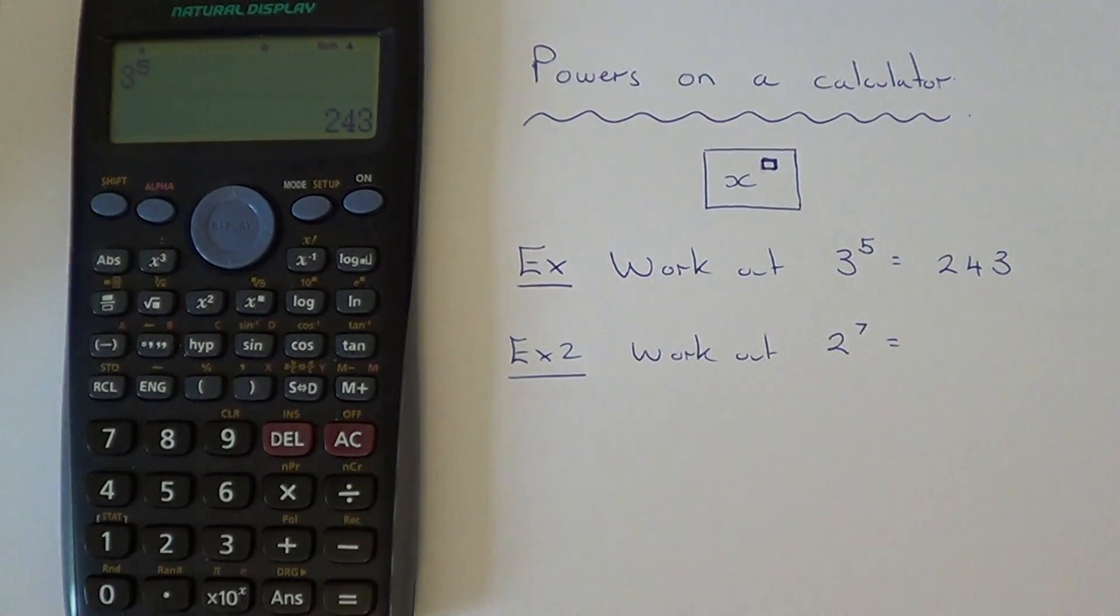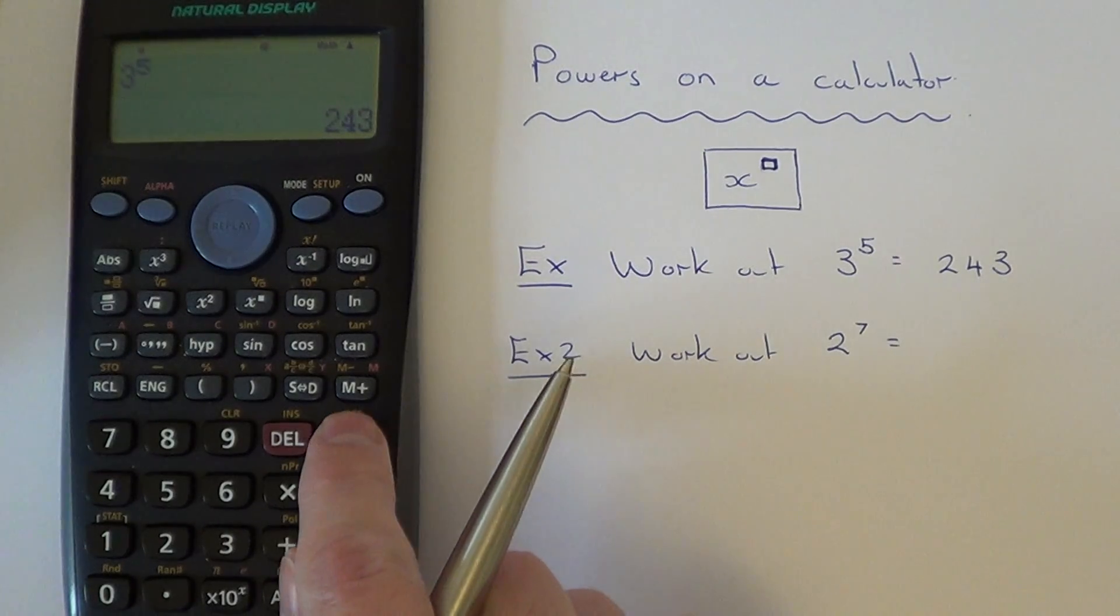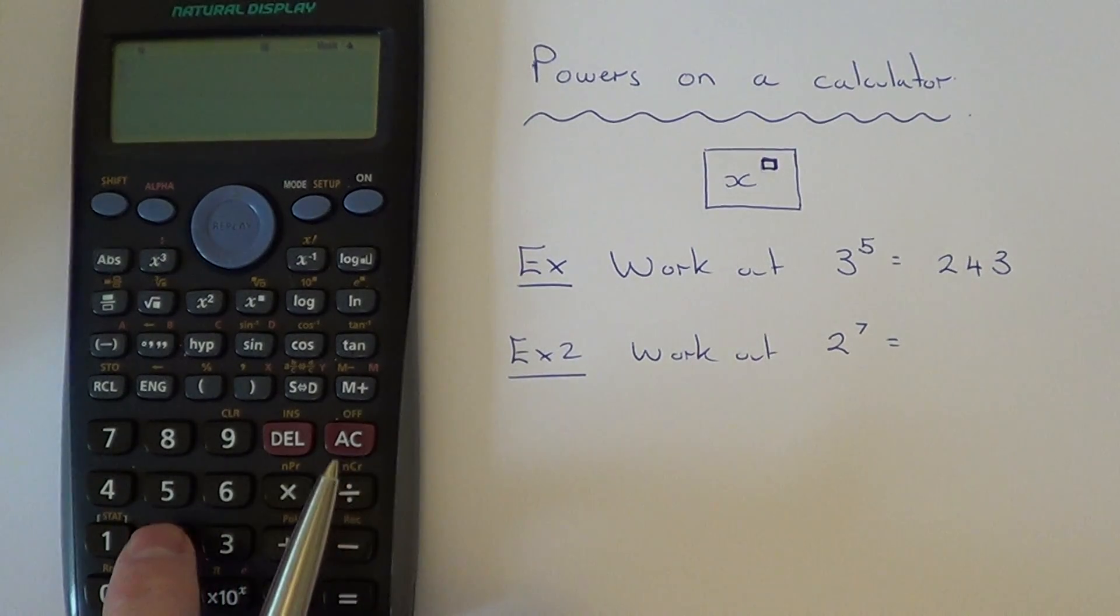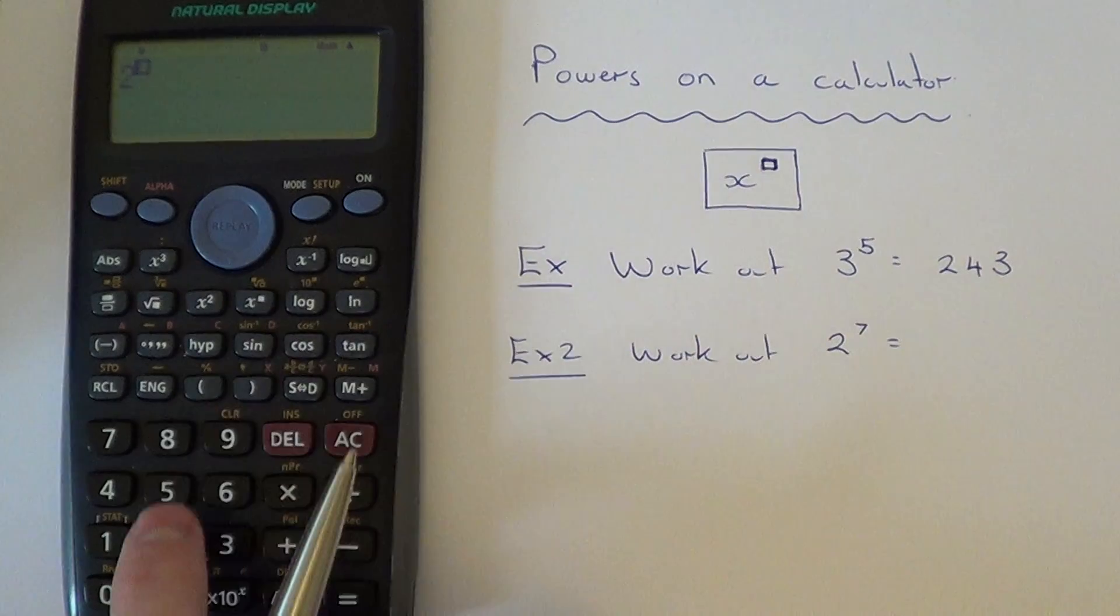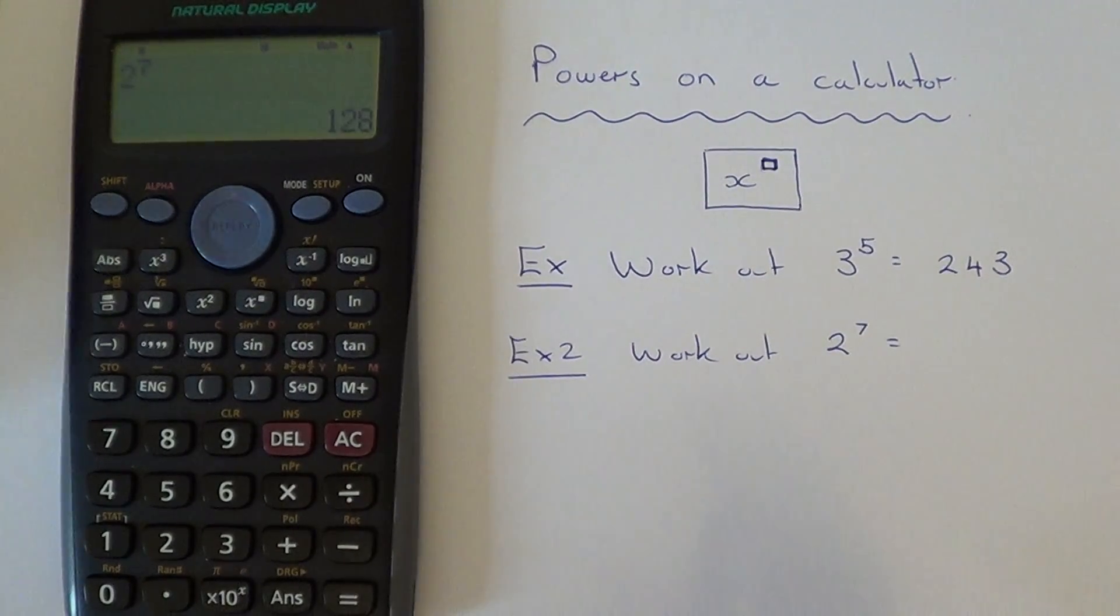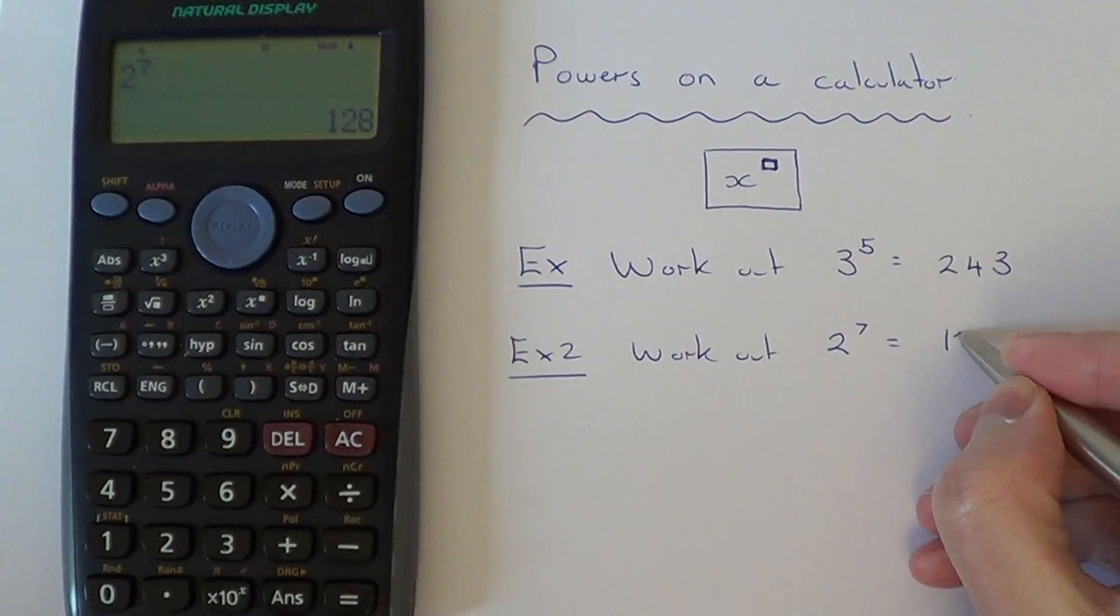Let's do example two. This time we've got two to the power of seven. Two to the power of seven equals one hundred and twenty-eight.